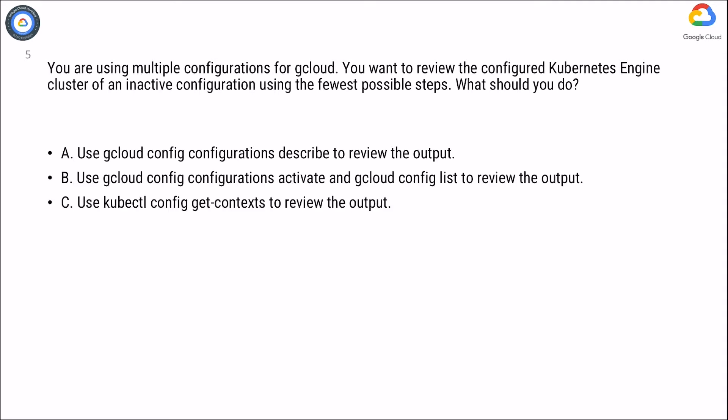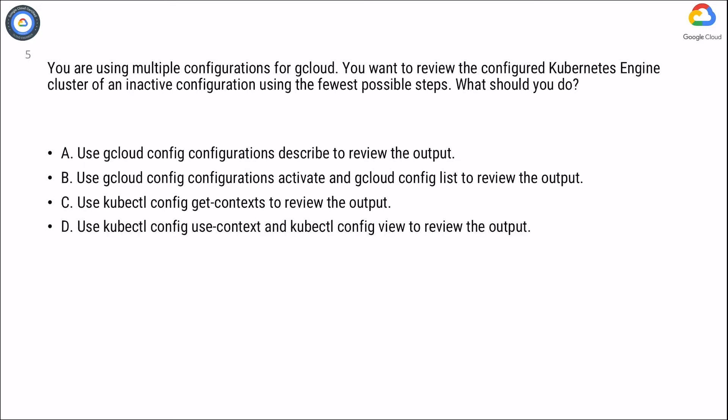Option C: Use kubectl config get-contexts to review the output. Option D: Use kubectl config use-context and kubectl config view to review the output.